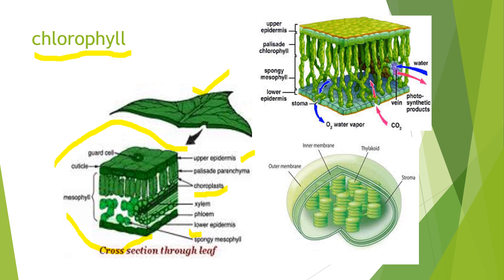This is another view of the upper epidermis, lower epidermis and the cells in between them. Now if one single chloroplast is taken and magnified, this is the structure you get. It is like the Cadbury's Gem shape — a discoid shape.